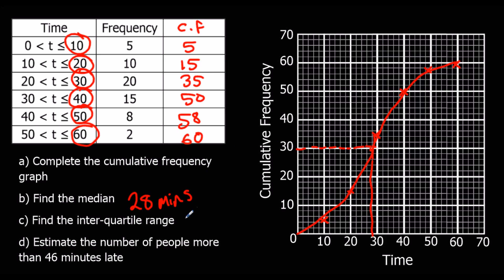Interquartile range. So we do the upper quartile and the lower quartile. So a quarter of 60 is 15. So we go along from 15 and down. So that was 20. Upper quartile, that's 45. So along from 45 and down. So halfway in there, that's 37. So 37. Interquartile range, 37 take 20, which is 17 minutes.